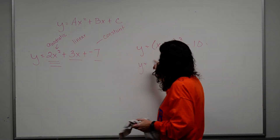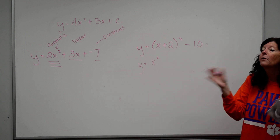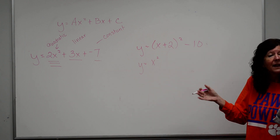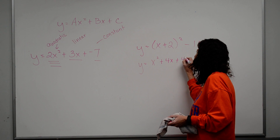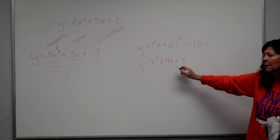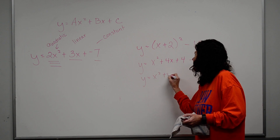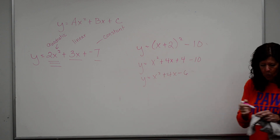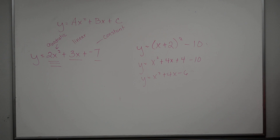When I do FOIL on x plus 2 squared: first gives me x squared, combining outside and inside gives me 4x, and last gives me 4. So x plus 2 times x plus 2 gives me x squared plus 4x plus 4, and then I subtract the 10. So I have x squared plus 4x minus 6. The quadratic term is x squared, the linear term is 4x, and the constant term is negative 6.